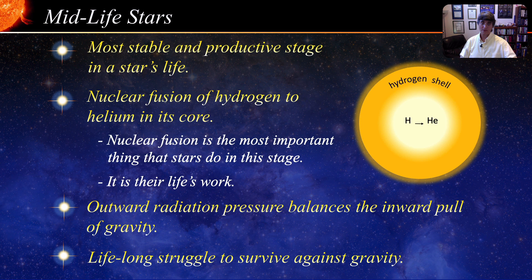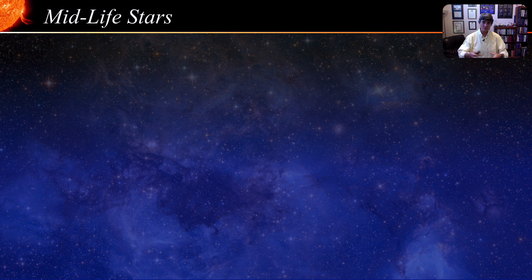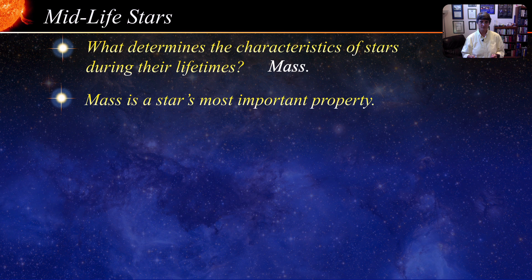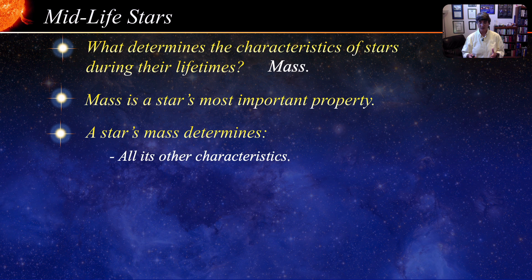All stars are born in the same way — a collapse under gravity within a giant cloud of gas and dust until it ignites as a fully-fledged star. But during their lives, stars differ from one another in physical properties: temperature, color, luminosity. What determines the characteristics of stars during their lifetime? The answer is mass. Mass is the most important property of a star — it determines all of its other characteristics such as temperature, color, size, and luminosity. It determines how long the star will live, and it determines the manner in which it will eventually die. Stars in their midlife, most stable stage are called main-sequence stars.